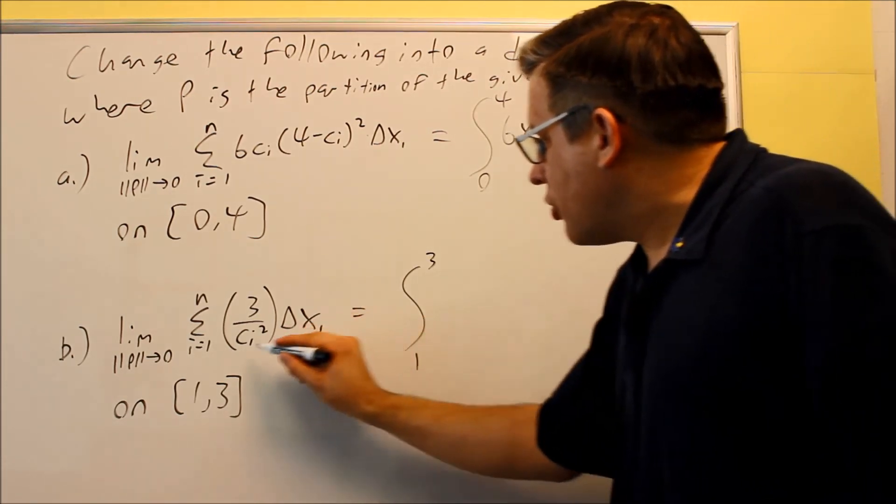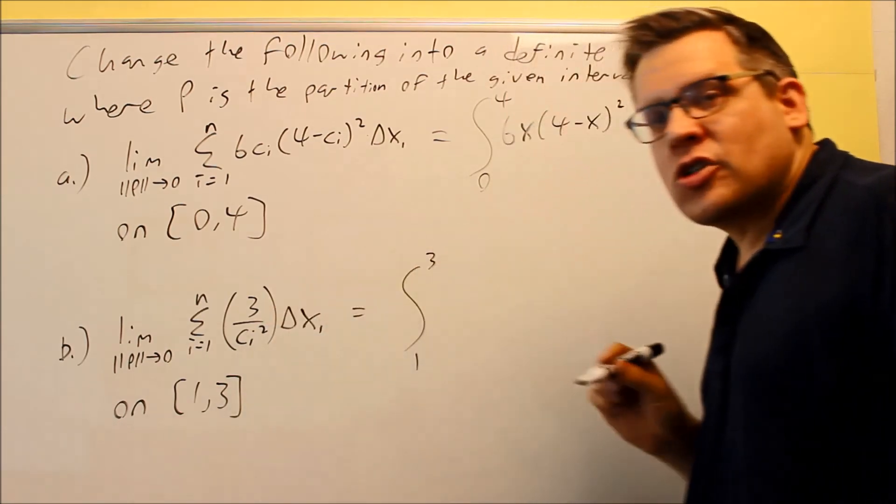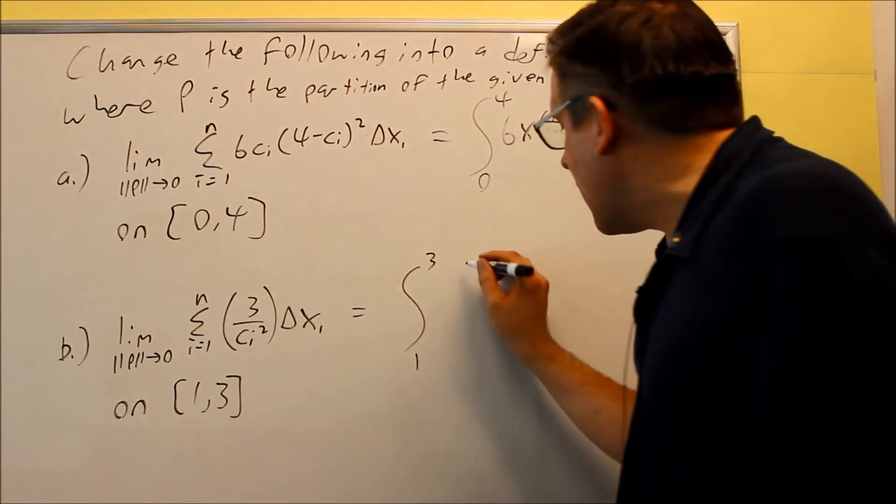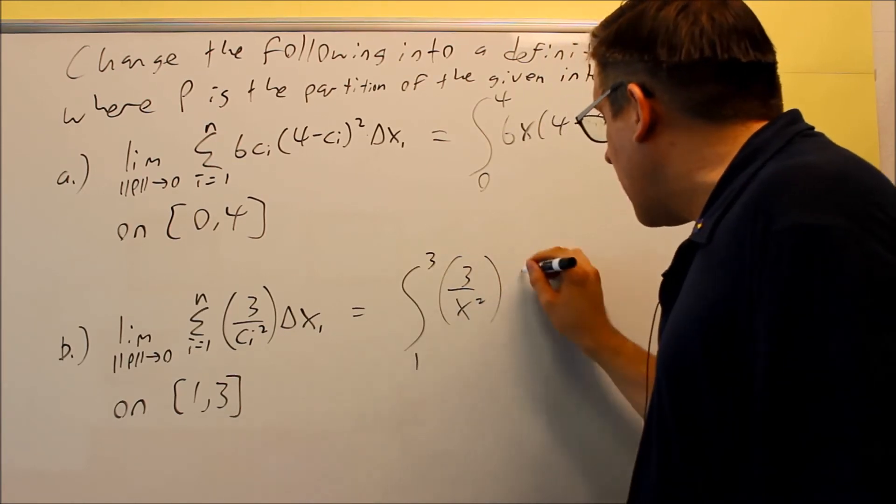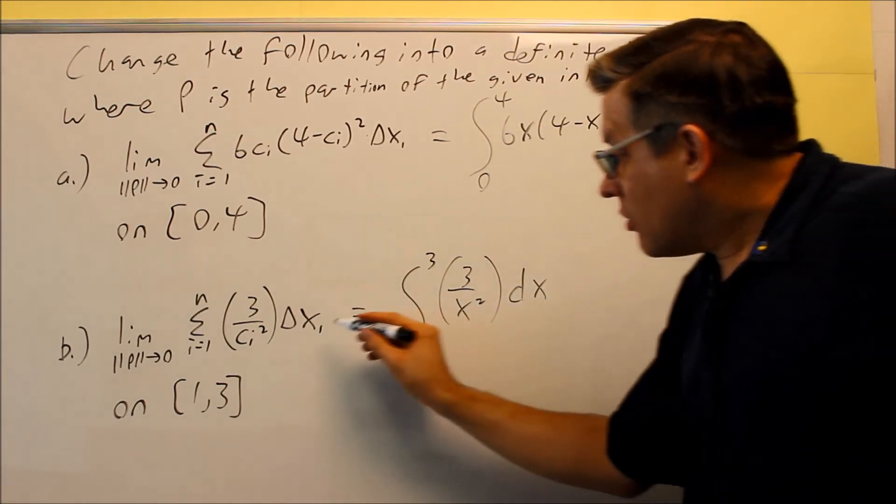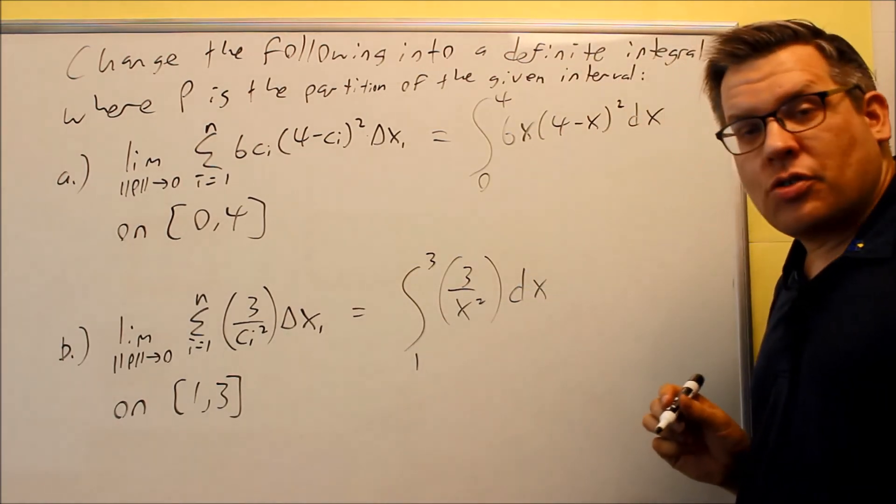We want our f of x, which is this inside the parenthesis. We're just going to put an x in place of the c_i. That's 3 over x squared, and then all that's going to be multiplied by dx, because again your delta x is always the same thing as your dx.